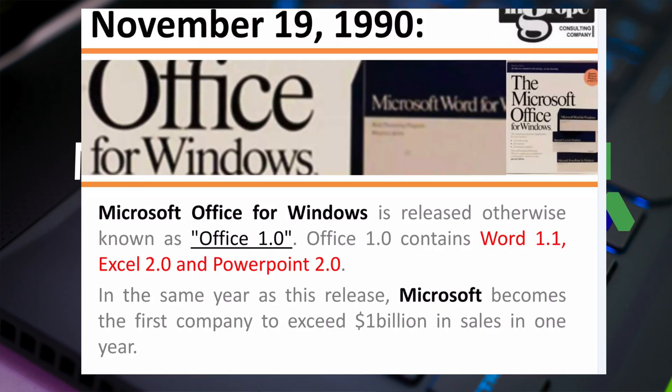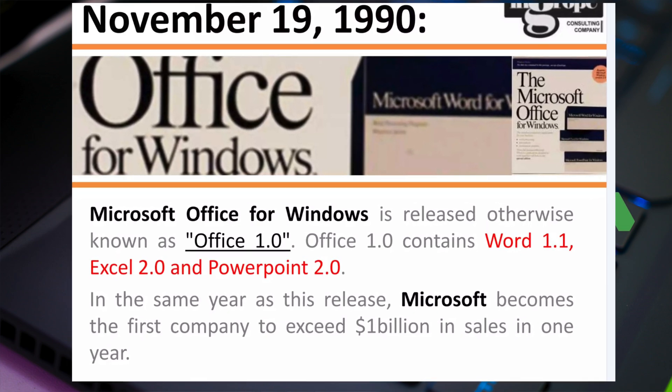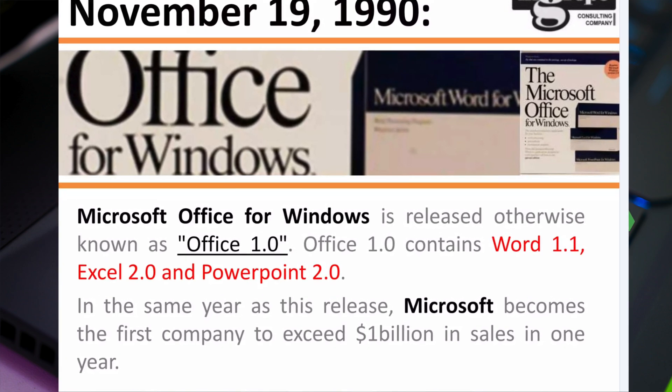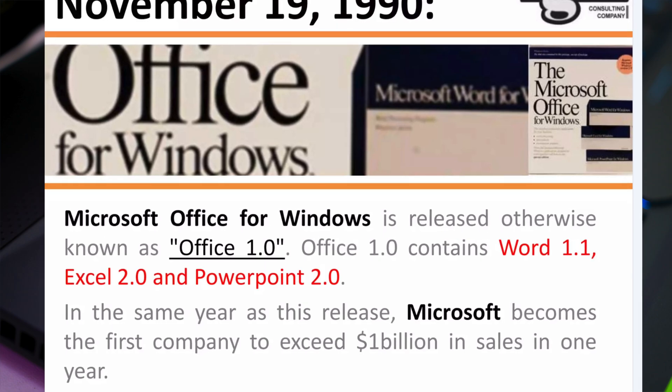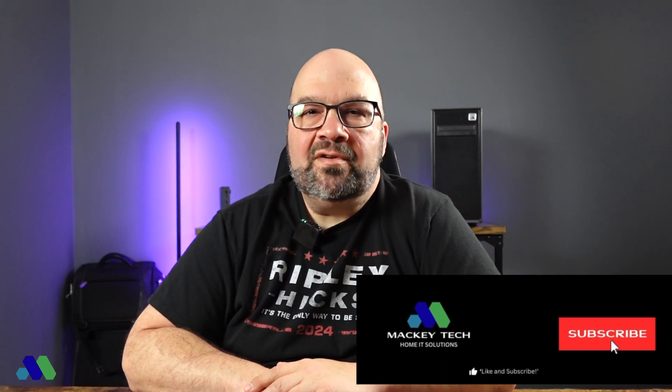As ironic as it might sound, the first version of Office 1.0 was first released for the Apple Macintosh in 1989, followed by the PC version in 1990 for MS-DOS. Since then, there have been about 20 different iterations, all the way up to today, which gives us Microsoft 365, aka M365, which is a cloud-based software as a service — a subscription service that you pay for annually or monthly, analogous to Adobe Premiere.